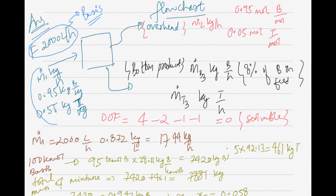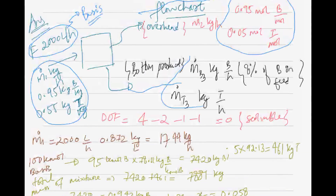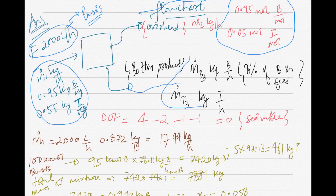In the flowchart, you can see m1-dot in kg per hour. I assume these are the mass fractions. This is the overhead product and this is the bottom product. According to the question, the overhead product composition is given in mole percent. The bottom product is also given, and it is mentioned in the question that the bottom product contains 8% of the benzene in the feed.